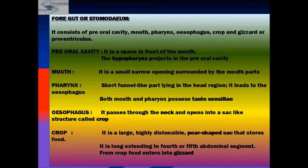The esophagus passes through the neck and opens into a sac-like structure called the crop. The crop is a large and highly distensible pear-shaped sac that stores food on a temporary basis.